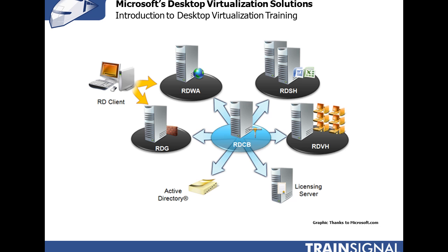Other important pieces of the Remote Desktop Services infrastructure include Microsoft Windows Active Directory, which is used to authenticate users and map them to Remote Desktop Sessions or Remote Desktop Virtual Machines on the RDVH. There's also a Licensing Server, which licenses remote users and devices to access the different types of resources they'll be using in the Remote Desktop Services infrastructure.